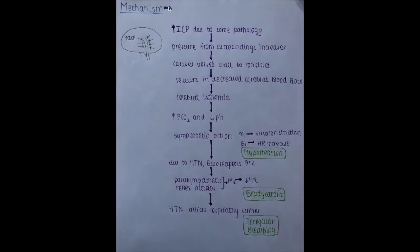Let's see the mechanism of how Cushing reflex develops. As there is increased intracranial pressure due to some pathology, the pressure from the surrounding structures will increase on the blood vessel. Due to the increased pressure, the blood vessel will constrict.